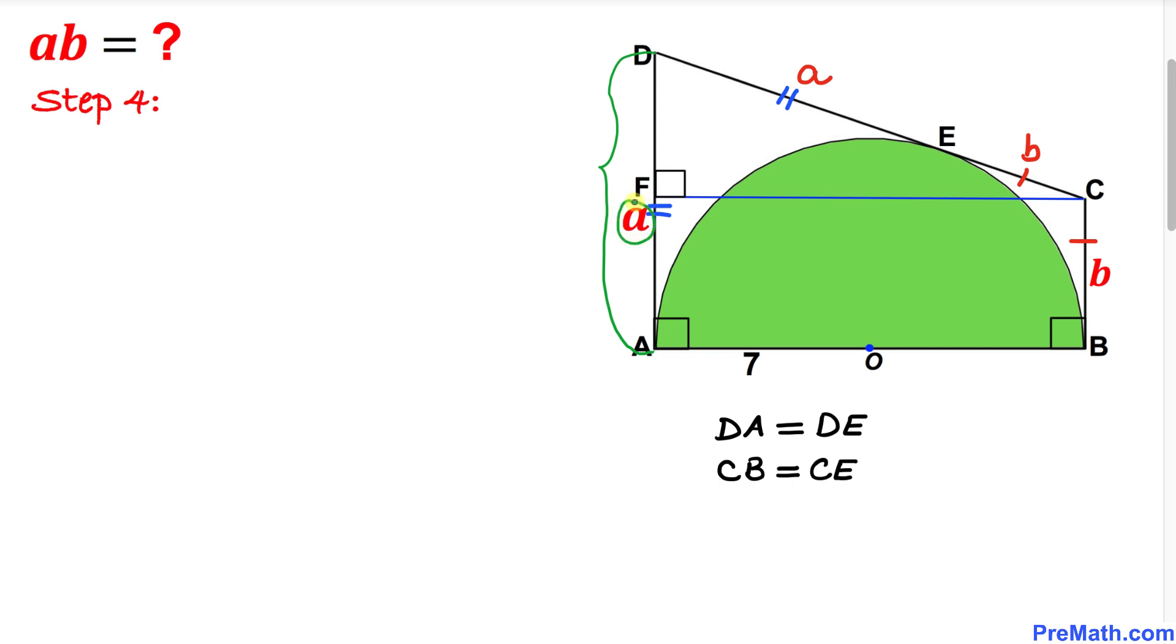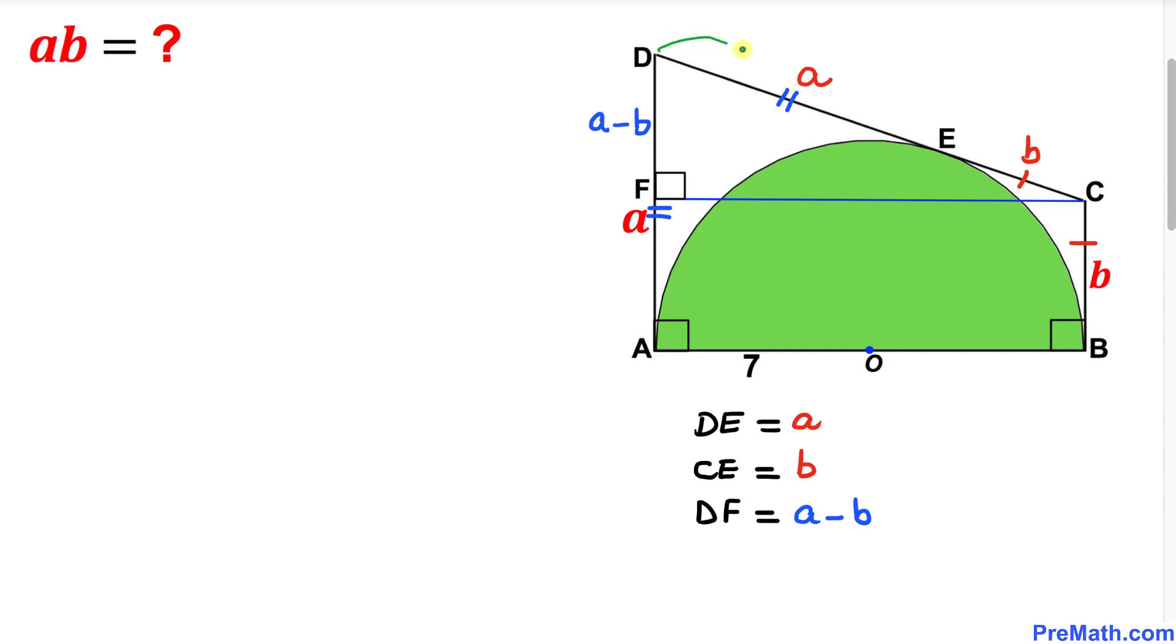Now we know that the whole side length DA equals a, and BC side length is b. Then side length DF is going to be a minus b. Therefore, our side length DF turns out to be a minus b.